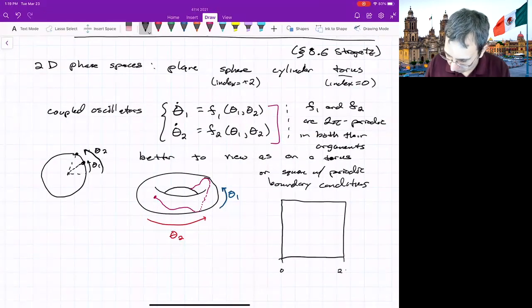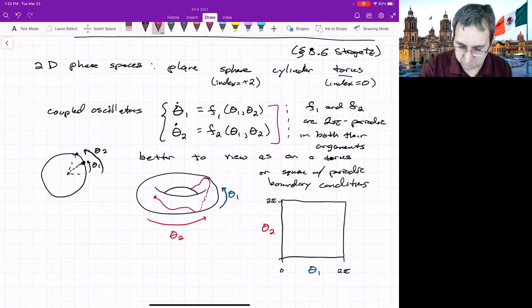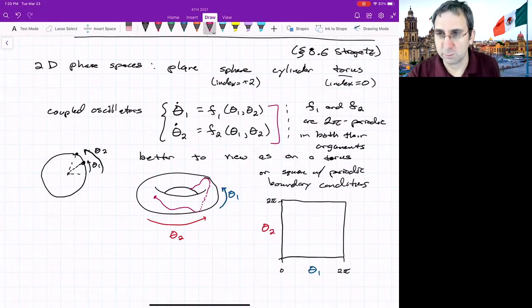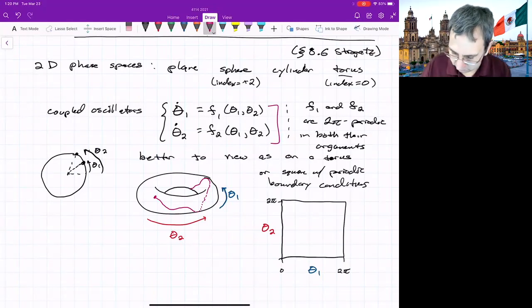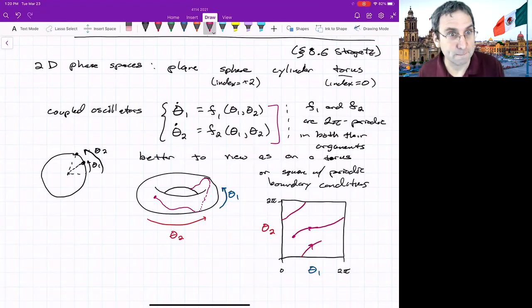You could also view the torus as a periodic box. So the square with periodic boundary conditions where we'd say it goes between zero and two pi in both directions. And one of these is theta one and the other is theta two. And if you were to follow trajectories, they'd be moving along this surface or moving in this square in some interesting sort of way. So in general, you'd have things that are kind of curving and when they hit one side, they come back to the other side.